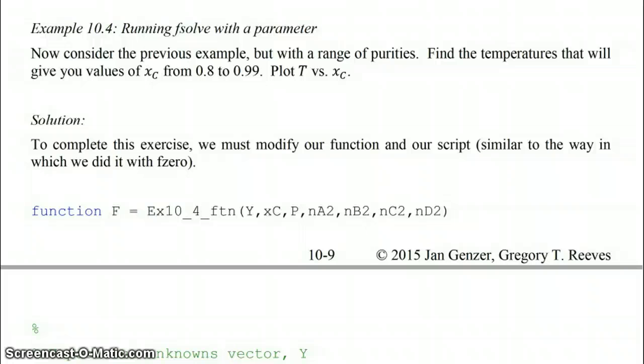In this example, Example 10.4, we're going to look at another example of using fsolve, but this time with a freely variable parameter or a set of parameters. We're going to consider our previous example, Example 10.3, but this time we're going to look at a range of purities for our product C. We're going to find the range of temperatures that will give you values of XC ranging from 0.8 to 0.99, and then our final output will be to plot T versus XC.